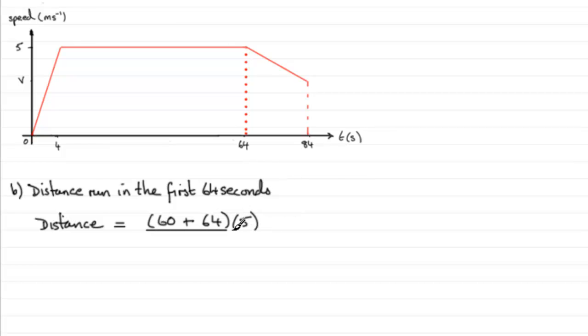If you work that out, what you end up with is 310. So the distance traveled is 310 meters in those first 64 seconds.